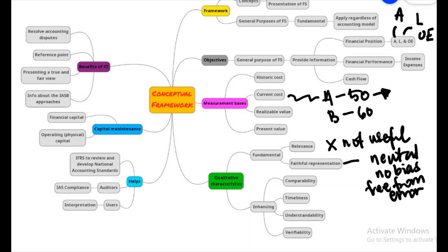Timeliness means that information is less useful the longer it takes to report. If you need at least one year to generate a particular piece of information, it will no longer be useful. If someone asks for information within one week, you should be able to generate it in one week. If it takes longer than that, it will not be useful because the need for that information has passed. So information should be generated within the required timeline.